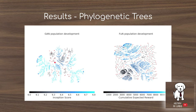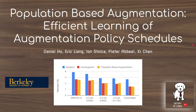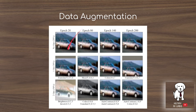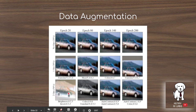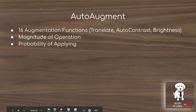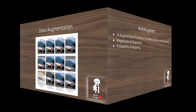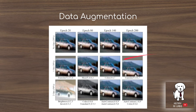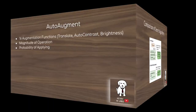Now we turn our focus to the application of population-based training to data augmentation: learning augmentation policy schedules. Data augmentation is a regularization technique in computer vision — for example, translating an image along the y-axis, or more extreme distortions of color. AutoAugment is a technique using a reinforcement learning controller — a recurrent neural network trained with proximal policy optimization — that learns the magnitude and probability of applying each of 16 different augmentation functions, such as shearing the y-axis, translating the y-axis, or color modifications.